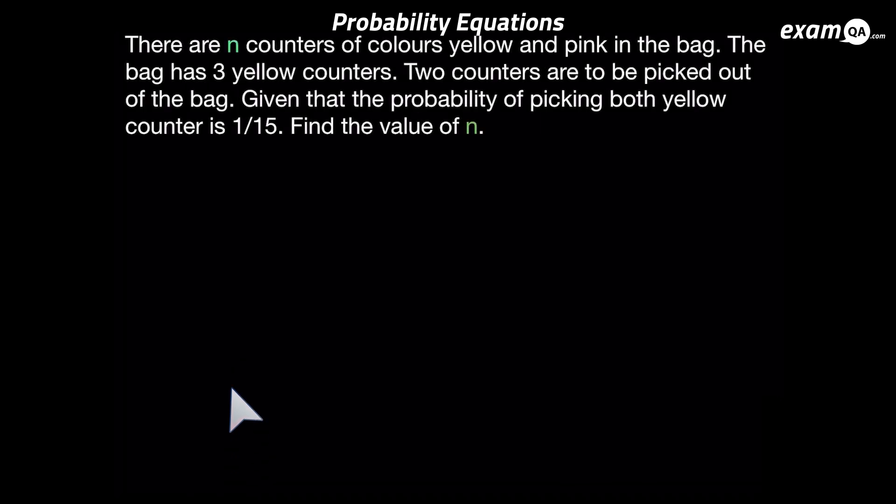In this question we're told that there's n amount of counters in the bag, and we're also told there are three yellow counters. The question also tells us that the probability of picking two yellow counters is 1 over 15, and we need to find the value of n. This question is a lot different to the other two because it hasn't given us a ratio — it's already told us about amounts of counters: n amount total and three yellow ones. So we don't need to start with a ratio and convert to amounts. It's very important you notice that in this question we're already talking about amount of counters.